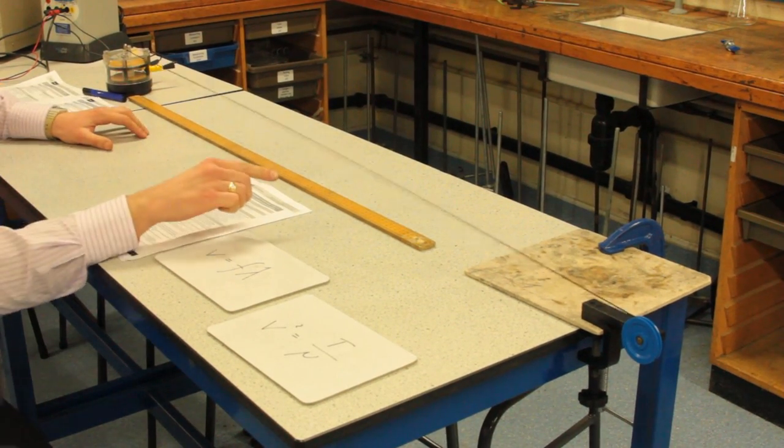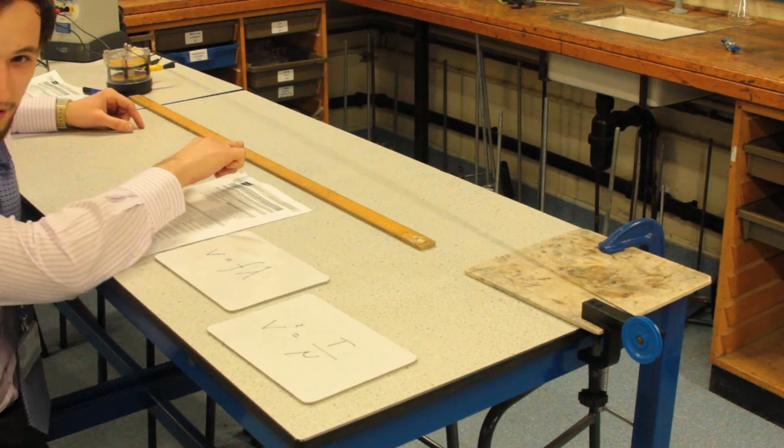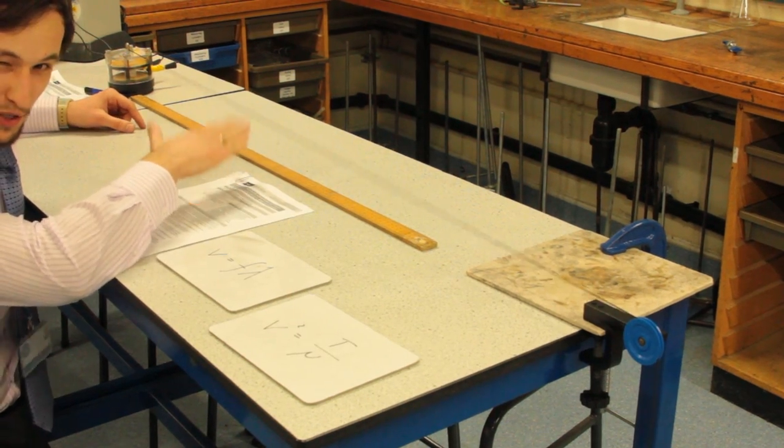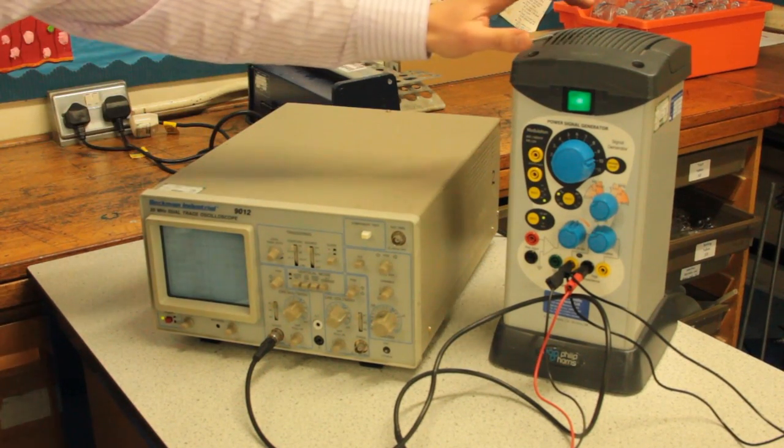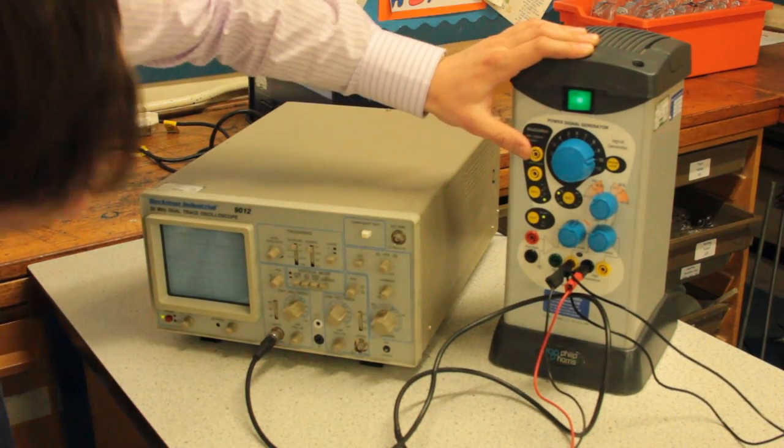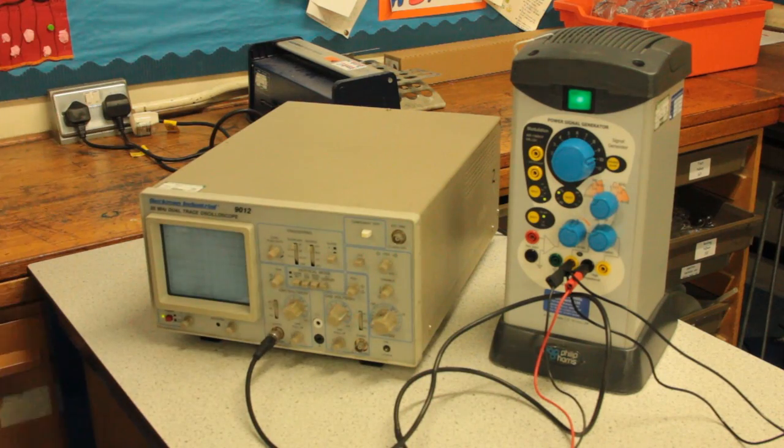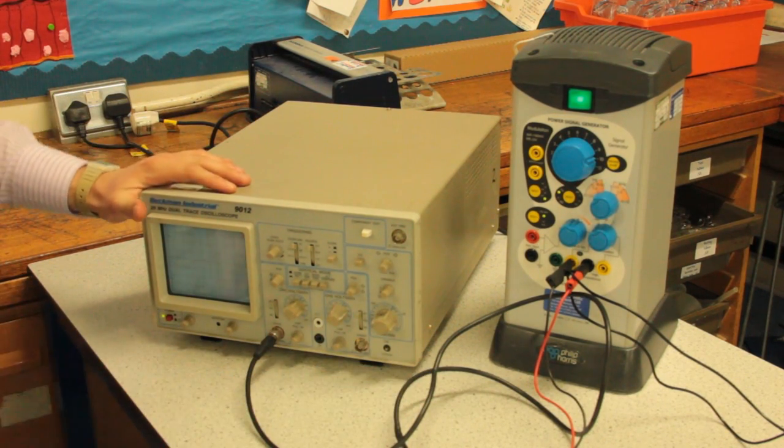So to begin with we have our fundamental frequency on the string, two nodes and our antinode in the middle which is the big wobble which you should be able to see. And on the right hand side here we have the signal generator which is currently outputting at 10 hertz to the vibration generator. And to check it here we have everything connected up to this oscilloscope.